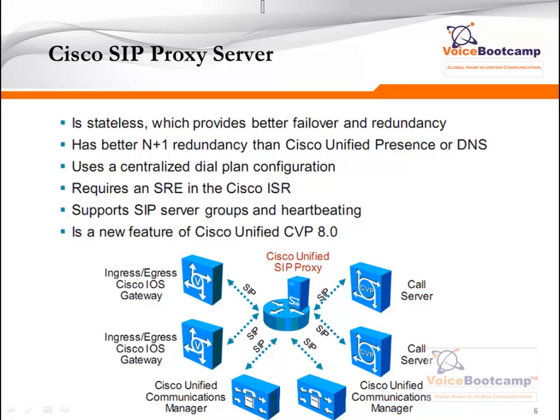Cisco SIP Proxy Server: if your environment does not have Cisco Unified Presence — which is for large deployments — Cisco recommends using the Cisco SIP Proxy Server, which is stateless, provides better failover and redundancy, and has better N+1 redundancy than Unified Presence. It uses centralized dial plan configuration and requires SRE on the router (ISR). It supports SIP server groups and heartbeating, and is a new feature of Cisco Unified CVP 8.0. Basically, a SIP proxy server is a router-based solution with a special IOS configuration and SRE, requiring a few settings before the router can act as a proxy server.